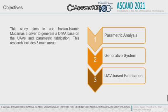In the first step, we analyzed Mogharnas and its background. The background includes specifications, typology, and traditional design and construction methods. In the second step, we examined creating a generative system that could be employed to design Mogharnas with a parametric tool — in this study we used Rhino Grasshopper. And in the third step, we designed a strategy to assemble our Mogharnas via UAV.